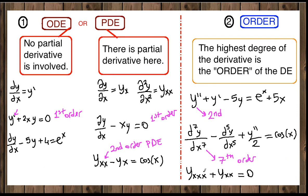One more example: this is a third order differential equation because the highest degree present is 3. And this is a third order partial differential equation because it contains partial derivative notation.